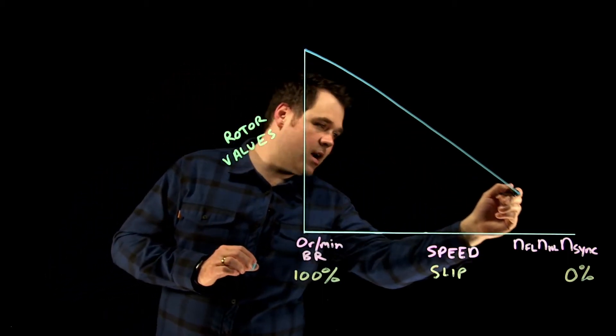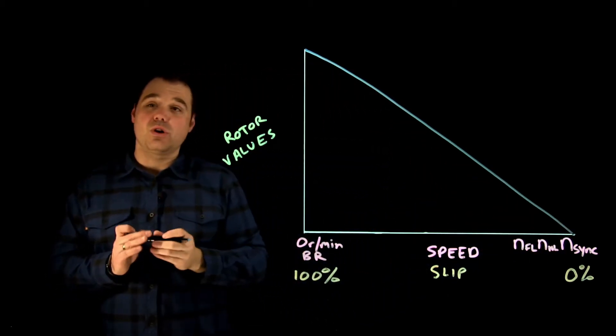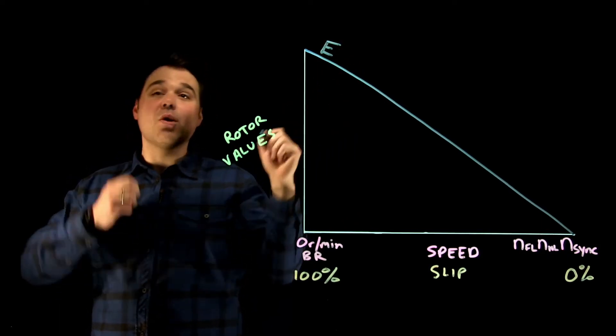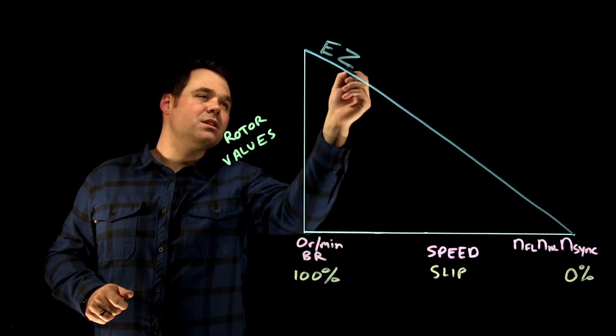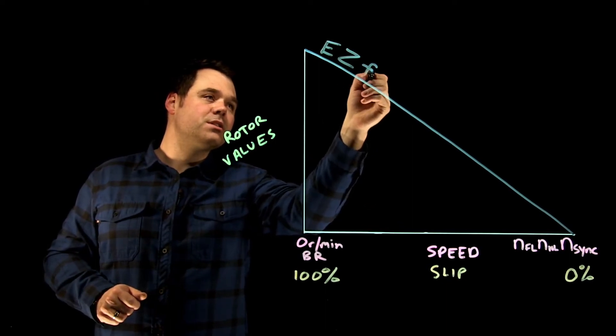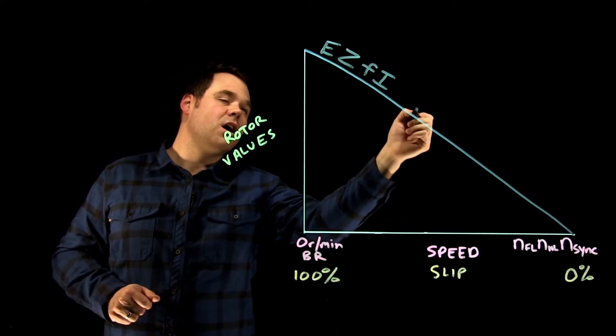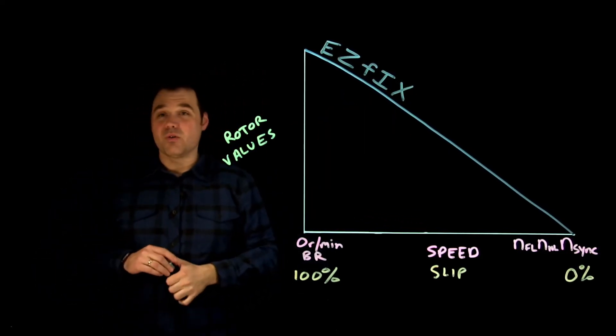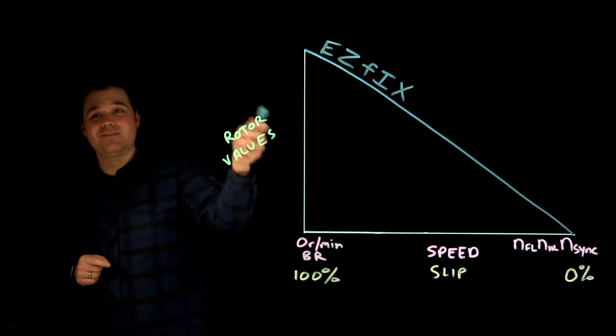So as slip goes down, all of these things will go down. And these things are the voltage inside the rotor, the impedance inside the rotor, the frequency of the rotor, the current of the rotor, and the reactance of the rotor. And that's why we call this the easy FIX chart.